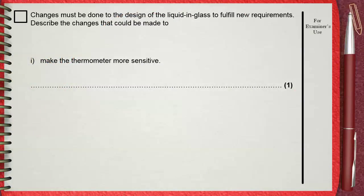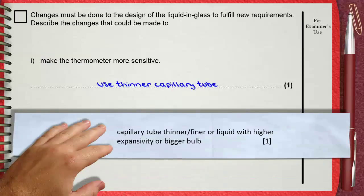You only need one of them, which is use thinner capillary tube. The mark scheme mentioned the three possibilities: capillary tube thinner or finer, or you can say liquid with larger expansivity, the third option is using a bigger bulb.